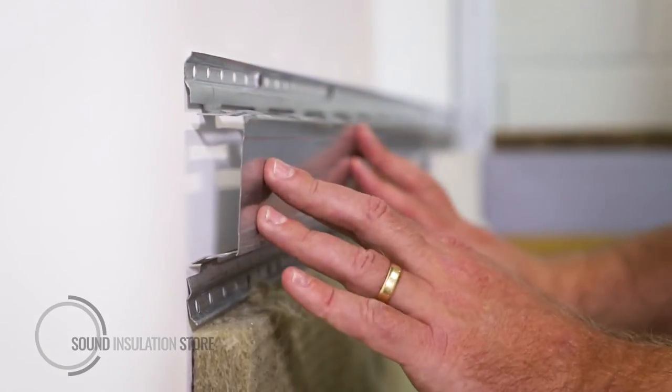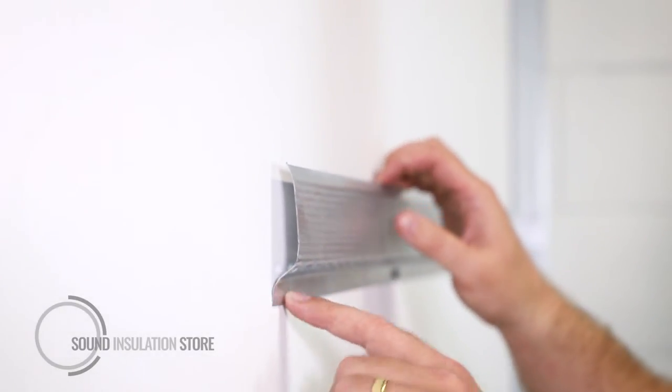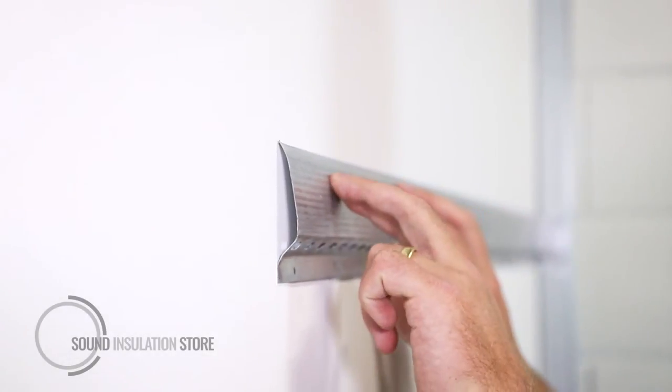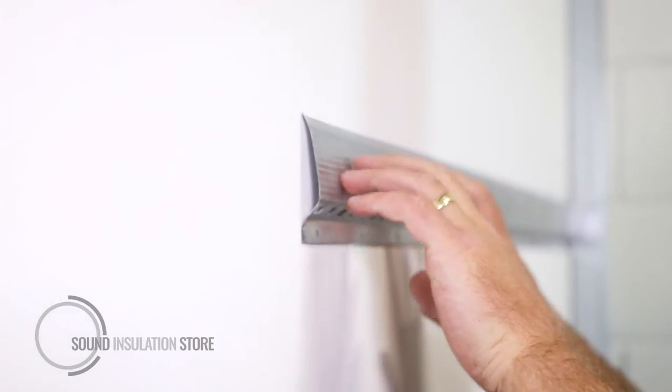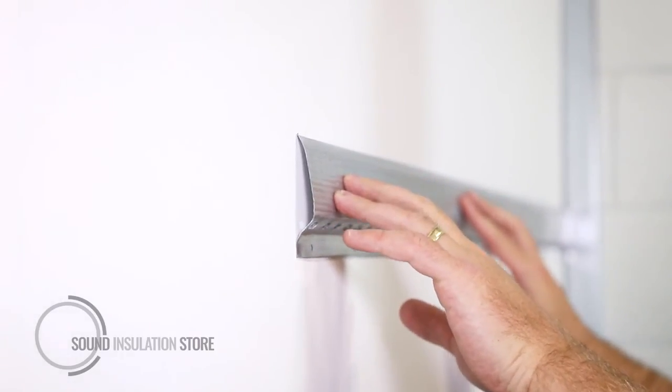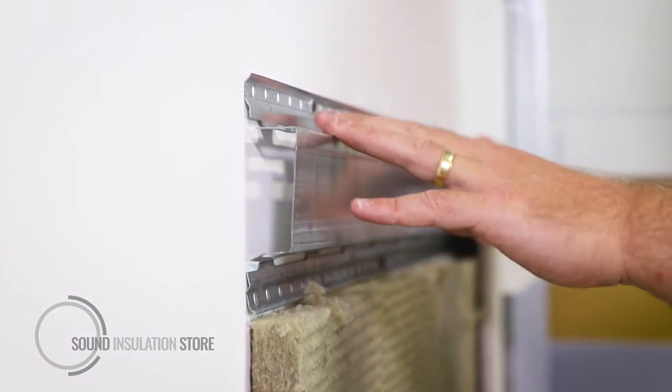With the standard resilient bar, it's only fixed at the bottom, so when you're applying your boards it's very easy to compress the bar in or for the screw to go all the way through and bridge your resilient bar. On the Maxi resilient bar, as long as your screw depth is correct, it's impossible to bridge.